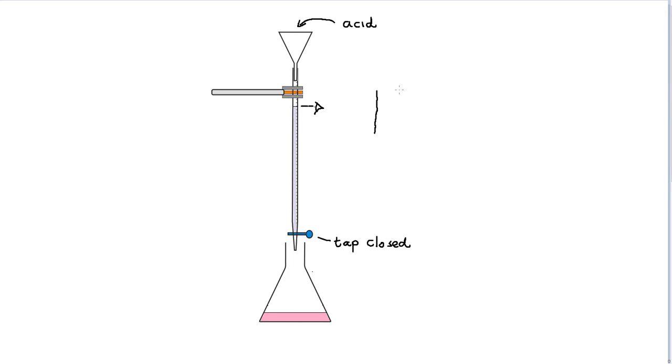That's the burette column, that's the meniscus, and we're going to measure there - the bottom of the meniscus - because that's easiest to read. We're going to take a note of that value and write that down in our notebook.